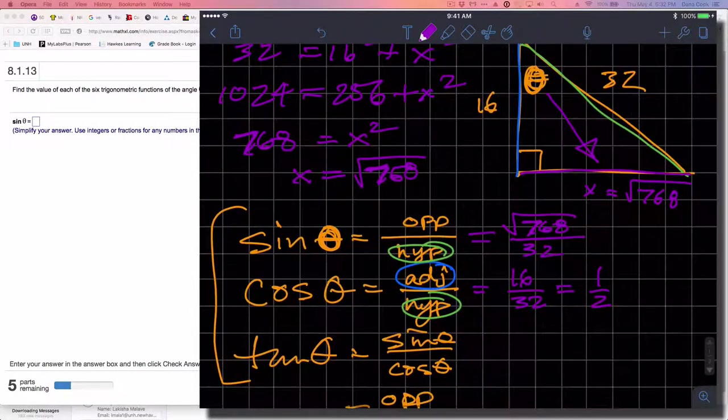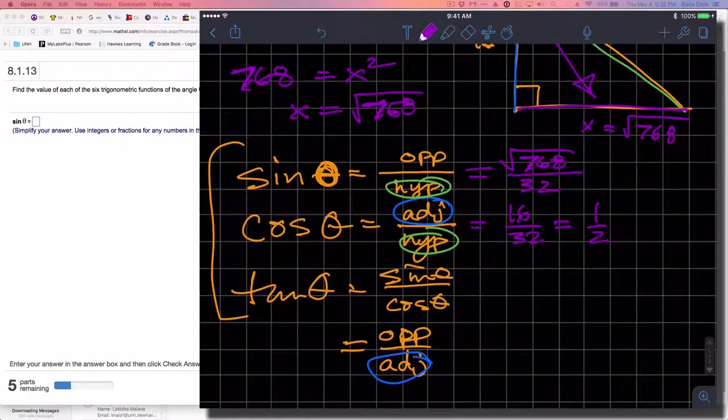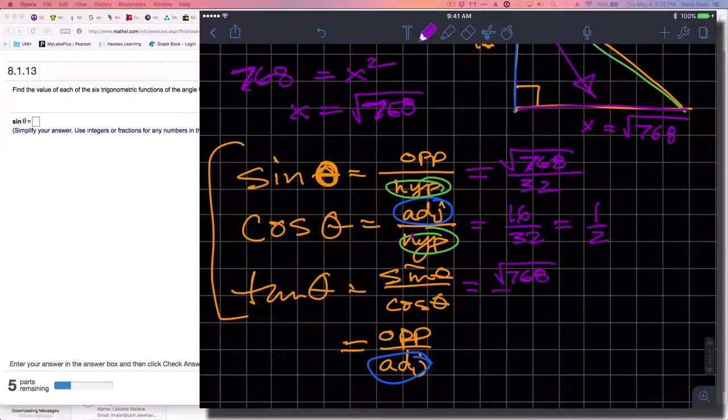This is going to be a 30-60-90 triangle. Tangent is the ratio of these two, or opposite over adjacent.